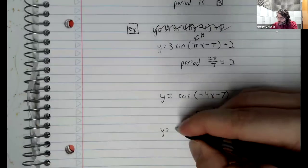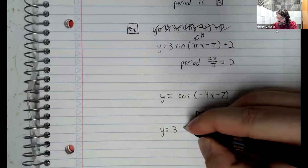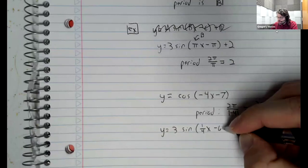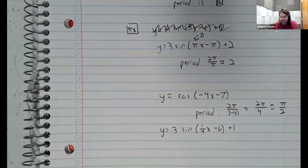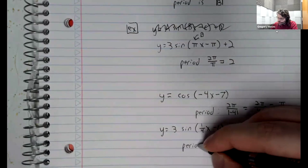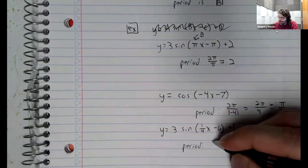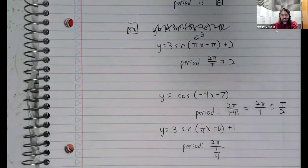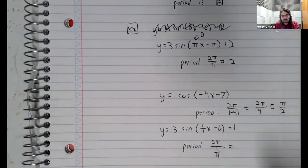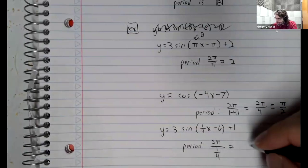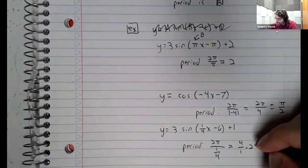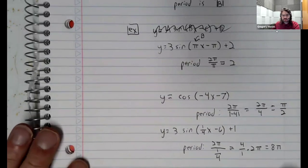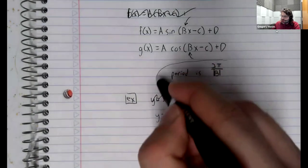Just one more quick example where the number in front of x is a fraction. Well, the number in front of x being a fraction doesn't change anything. Now we have 2 pi divided by a fraction. But hopefully we remember how to simplify this. Multiply by the reciprocal. And get the period, again, using this formula.